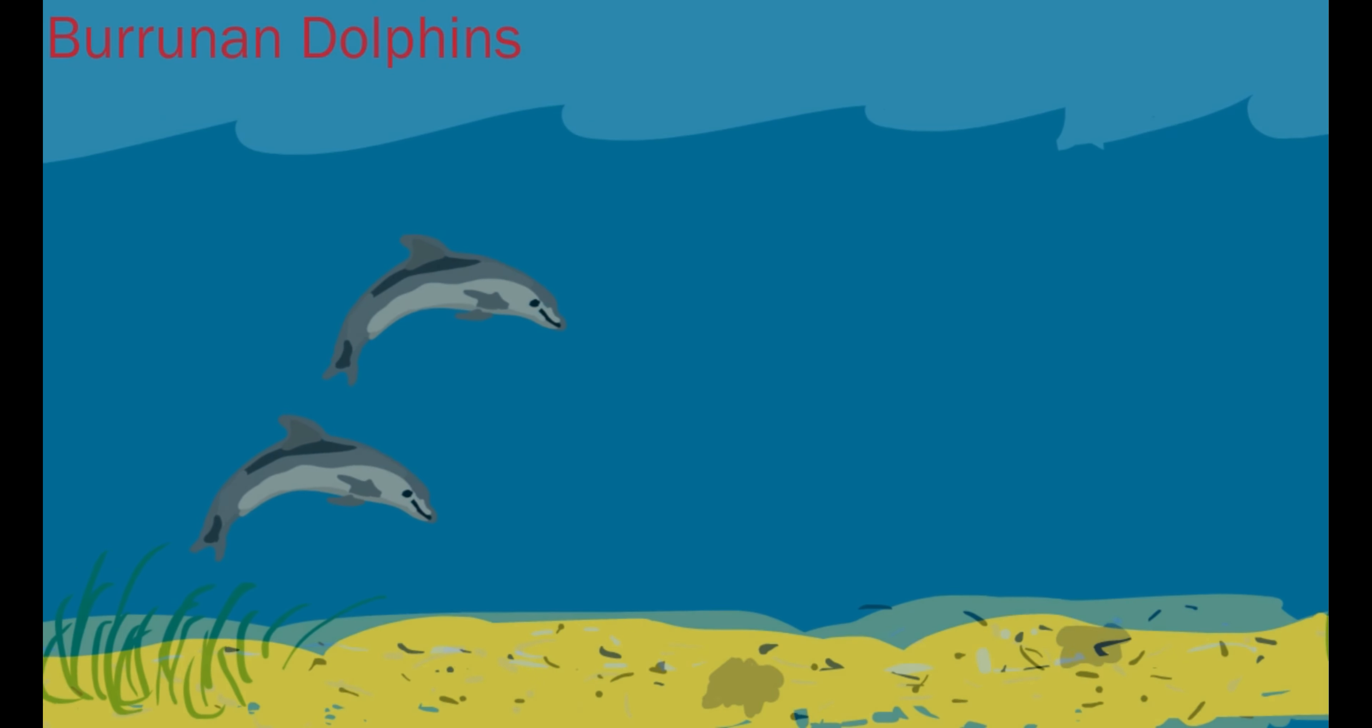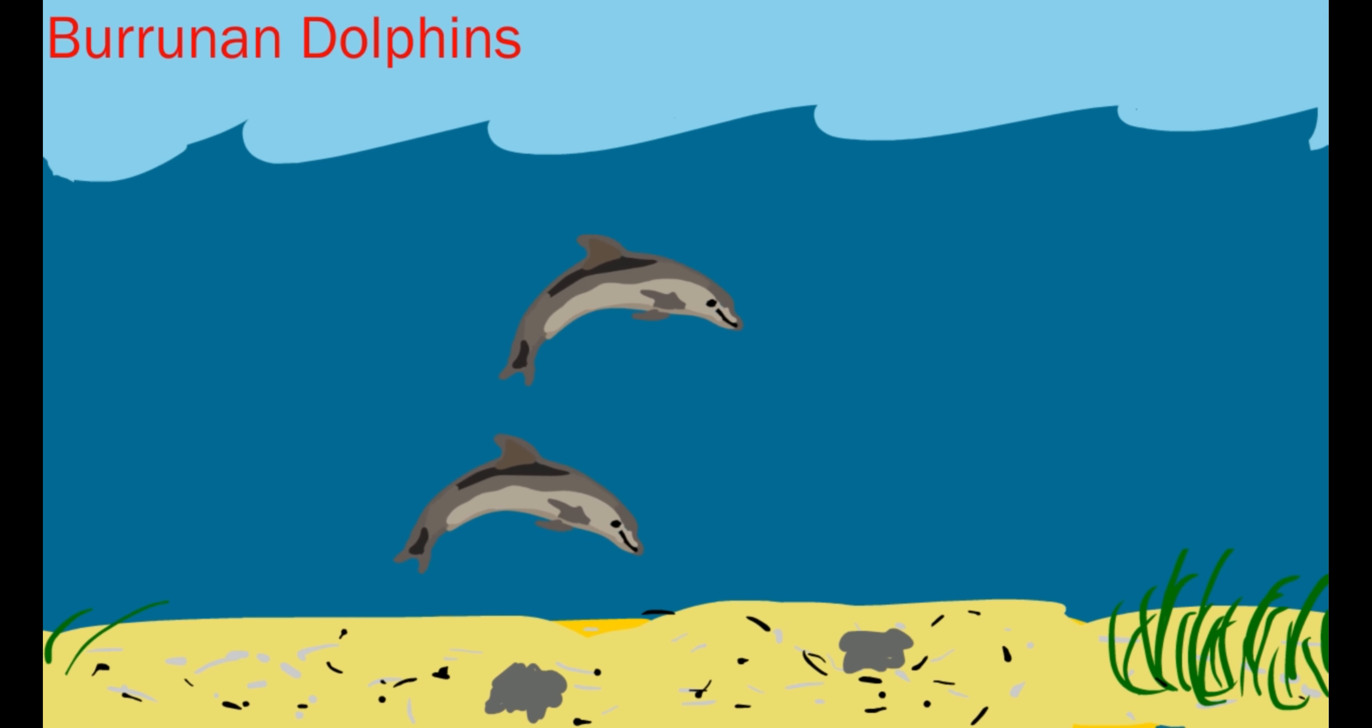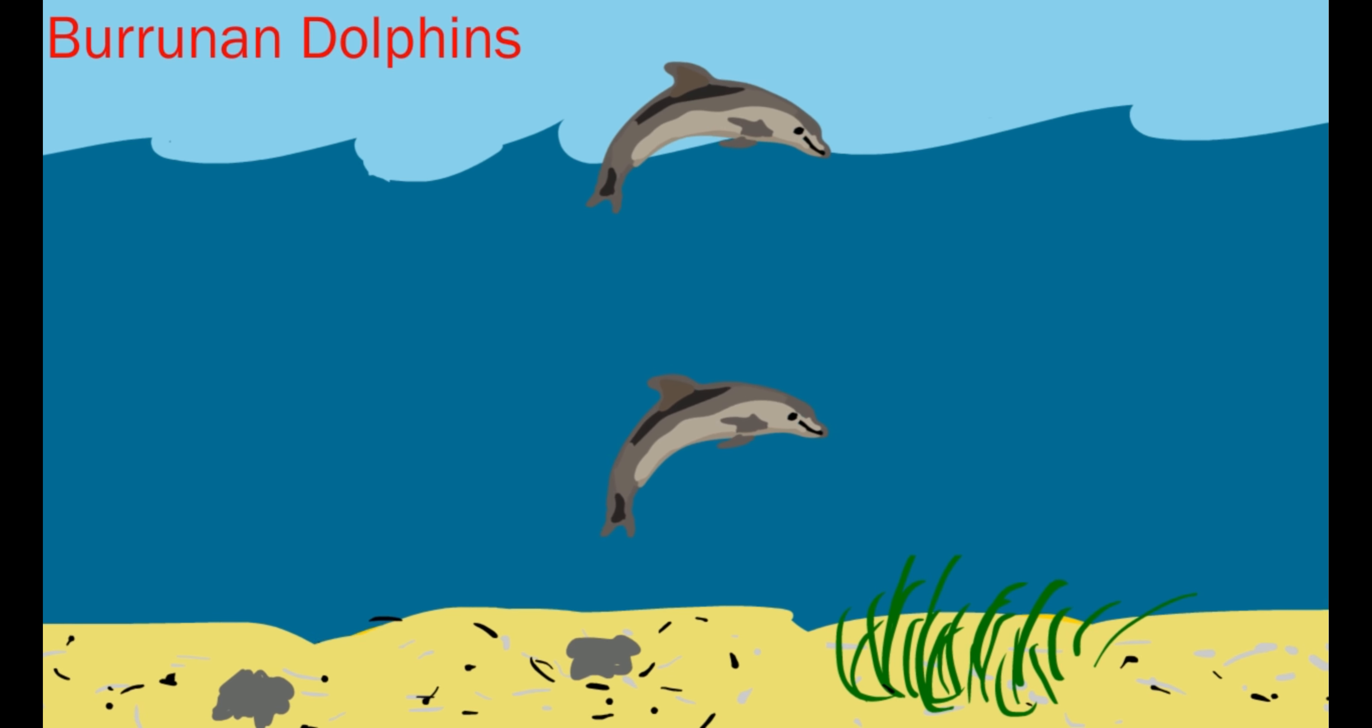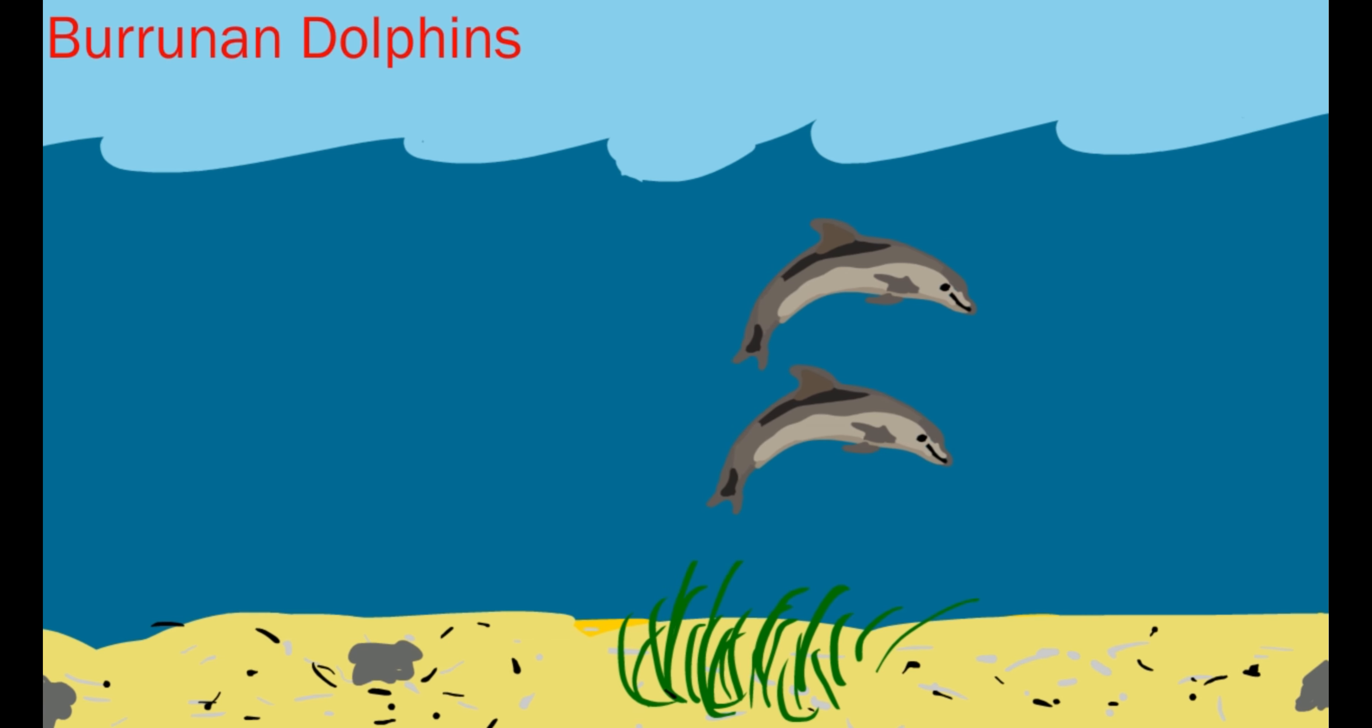As we get further above the bay floor, we find animals you may have seen before. Vernon dolphins call Port Phillip Bay home, and these dolphins are about 2.2 to 2.7 meters long. They like to eat fish, crabs, squid, and shrimp.